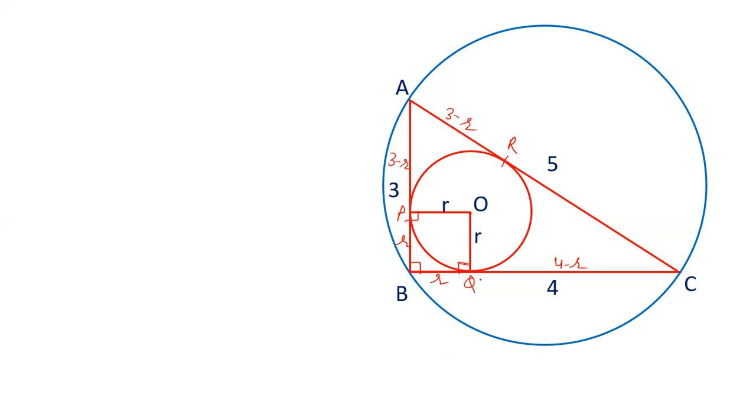Similarly, CQ is a tangent from C. CR is a tangent from C. Tangent from an external point are equal. So CR is 4 minus r.